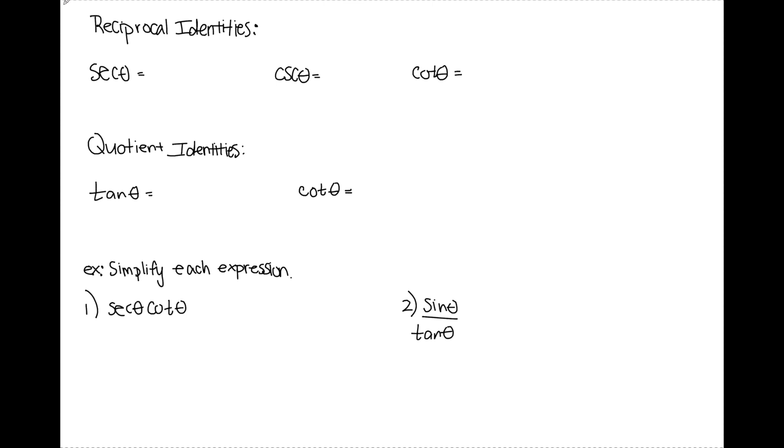So first off, let's define each of our reciprocal identities. My first reciprocal identity is secant theta, and that's equal to 1 over cosine theta. Cosecant theta is equal to 1 over sine theta, and cotangent theta is equal to 1 over tangent theta. They're reciprocals because they're all just 1 over an original trig function.